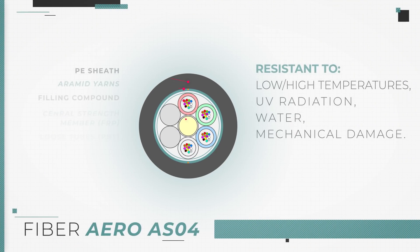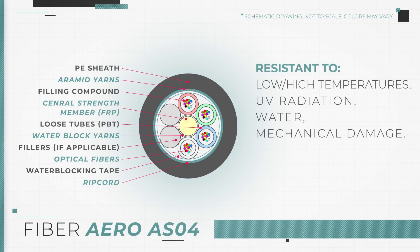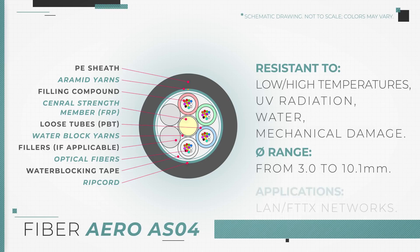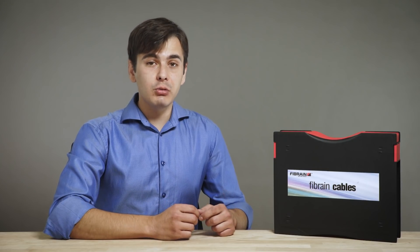Fibrin fibers are manufactured in versions that include sheaths that are resistant to low and high temperatures, UV radiations, water or mechanical damage. Their diameters range from 3.0 to 10.1 mm and their typical applications are LAN and FT-TX networks such as broadband telecommunication systems, telephony or television. Those fibers are available in sections of 100 meters or longer with multiples of 100.